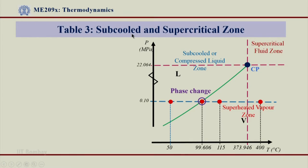Now, let us see table 3 for subcooled and supercritical zone when the pressure is above the critical pressure, that means the pressure is more than 22 MPa.